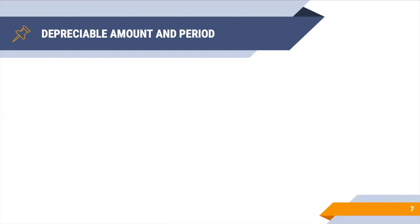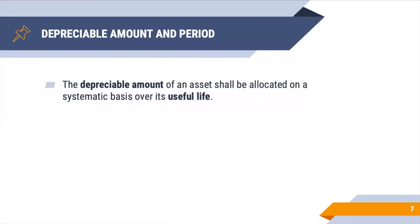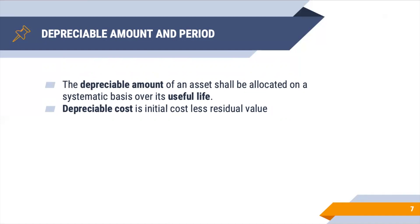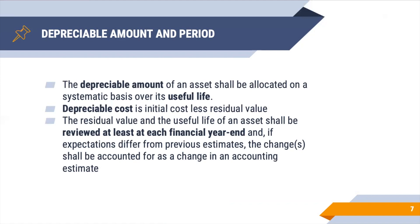Let's discuss some concepts and definitions in depreciation. The depreciable amount of an asset shall be allocated on a systematic basis over its useful life. The depreciable amount, or depreciable cost, is the initial cost less the residual value. The residual value is the amount of the asset at the end of its life. Take note that the residual value and the useful life of an asset shall be reviewed at least each financial year-end, and if expectations differ from previous estimates, the changes shall be accounted for as a change in accounting estimate.